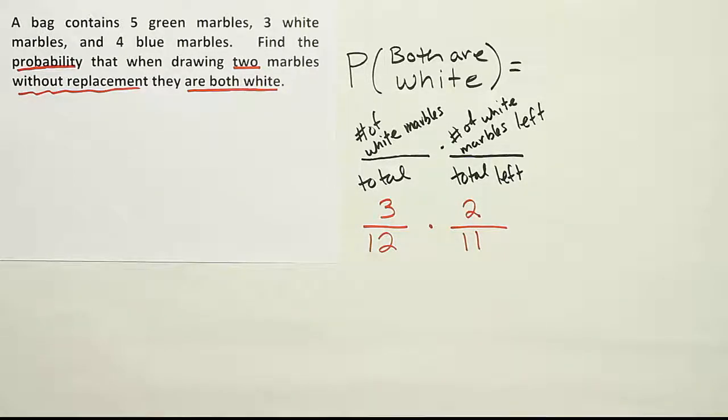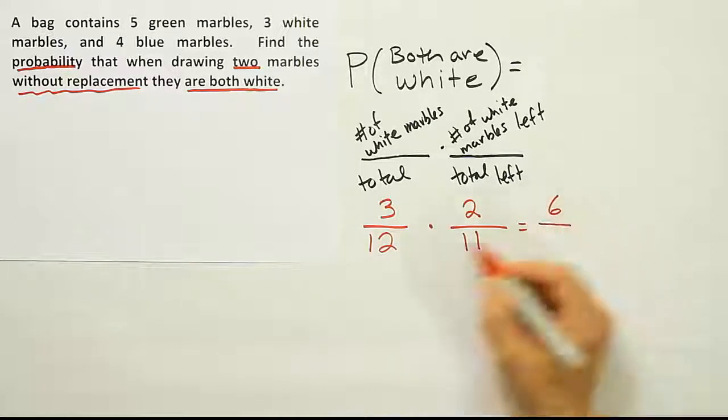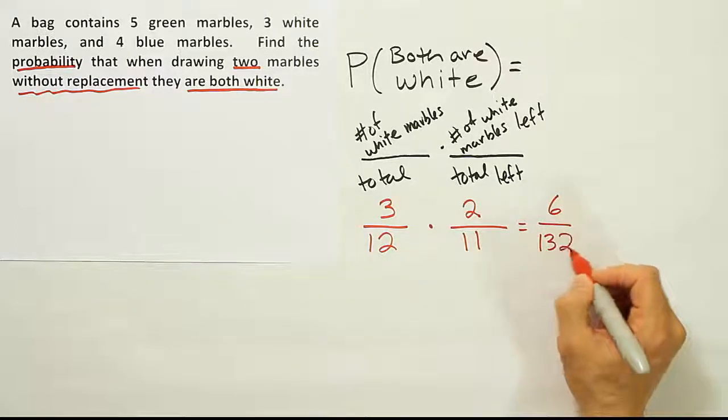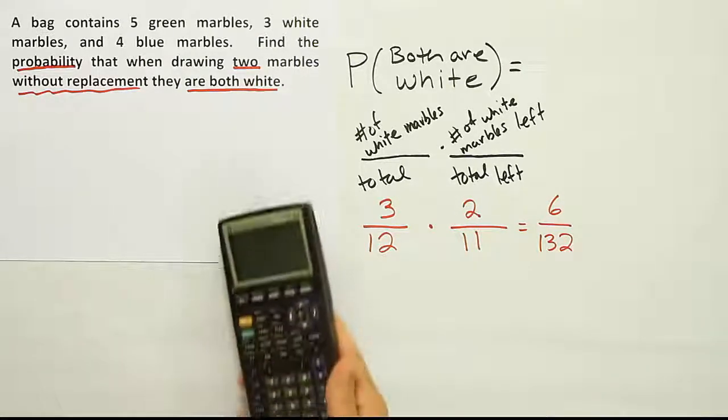And basically, that's it. When you're done, you do the multiplication, and you get three times two is six, divided by 132, twelve times eleven. Alright, let's divide that and see what we get in our calculators as a decimal.